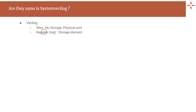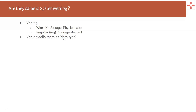Now coming to SystemVerilog, the question is: are the data types the same in SystemVerilog as in Verilog? The answer would be no. If you directly map SystemVerilog data types to Verilog data types, you will end up with a lot of confusion. In Verilog, we had a wire type without any storage capacity representing a physical wire, and a register declared by using the reg keyword which has storage capacity and can be used as a storage element.